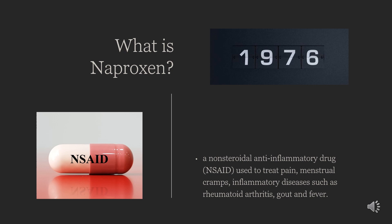Naproxen, sold under the brand name Aleve among others, is a non-steroidal anti-inflammatory drug used to treat pain, menstrual cramps, and inflammatory diseases such as rheumatoid arthritis, gout, and fever. Naproxen was patented in 1967.